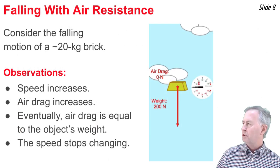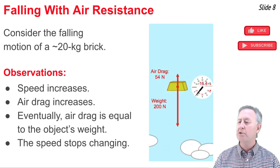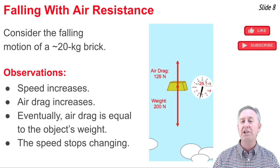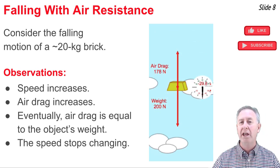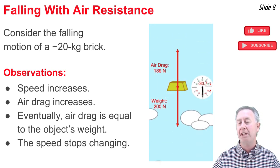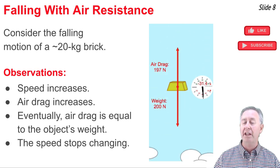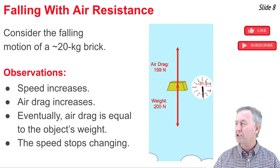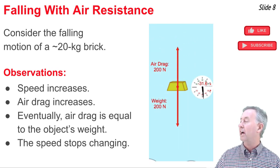In this animation, we'll observe the falling motion of an approximately 20-kilogram brick. What we're observing here is that the speed of the brick is increasing, and as it does, the upward force of air resistance is increasing as well. That continues to happen until the upward force of air resistance is equal to the downward force of gravity. At this point the forces are balanced, and the object no longer accelerates. Its speed is locked in.